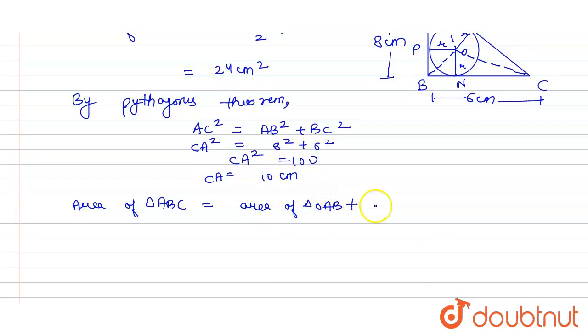Now putting the values: area of triangle ABC is 24, which we found before. Area of OAB will be 1/2 × r × AB, area of OBC will be 1/2 × r × BC, and area of OCA will be 1/2 × r × CA.